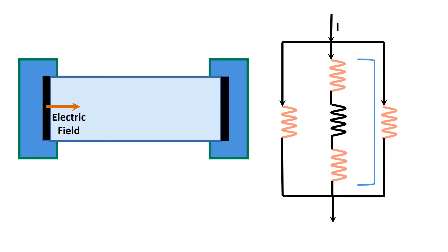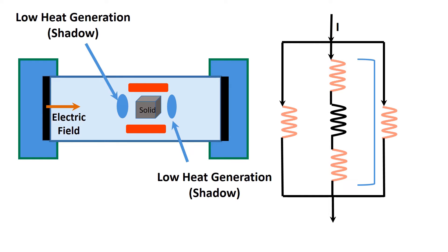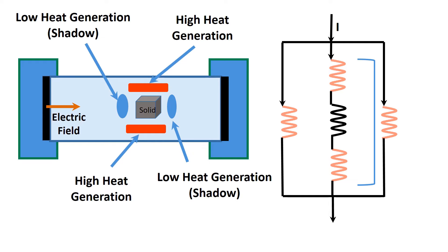In the case of only a liquid phase with uniform resistance, heat generation should be uniform inside the liquid phase. However, if solid particles with different thermal resistance are present in the liquid phase, then non-uniform heat can be generated. In this diagram, low heat generation occurs at the front and back sides of the particle, and high heat generation occurs on the sides of the particles. This can be represented by an electric circuit.